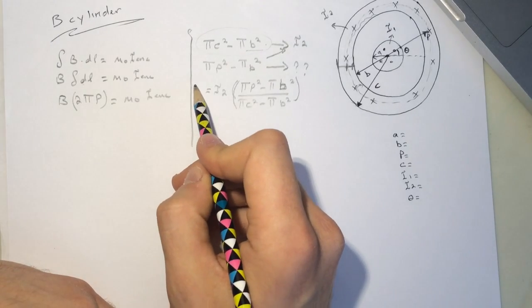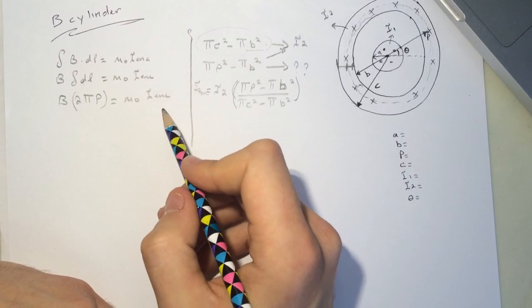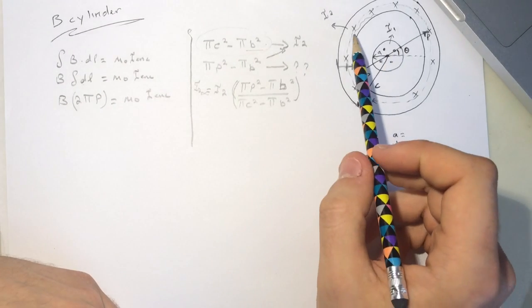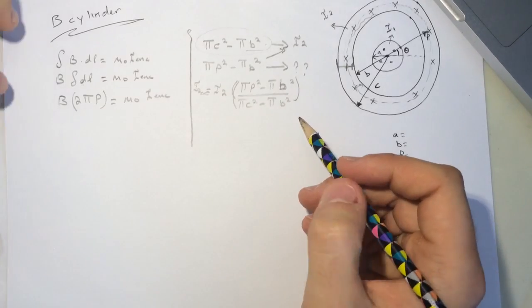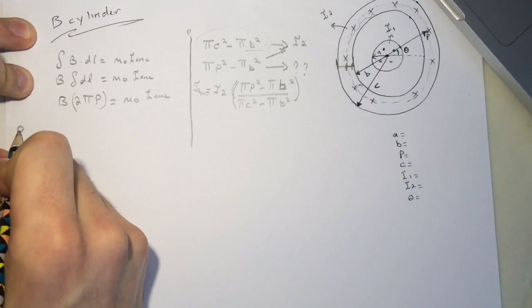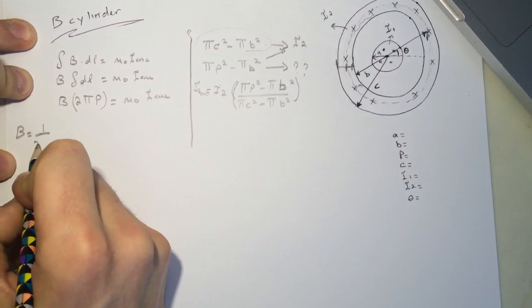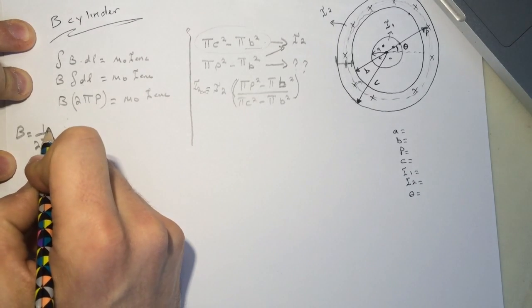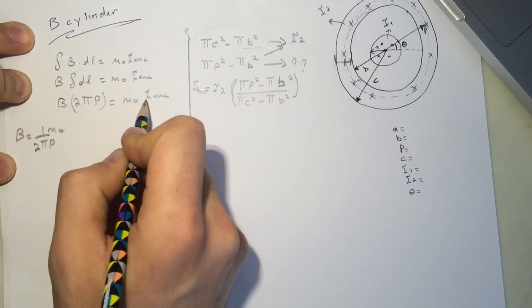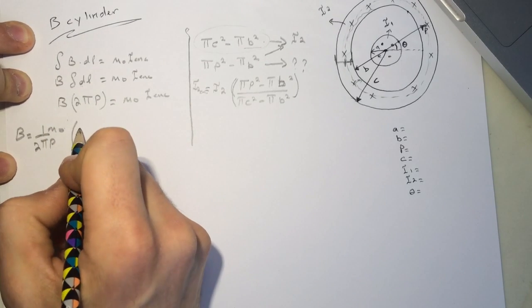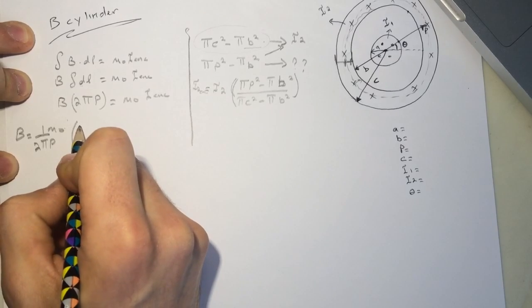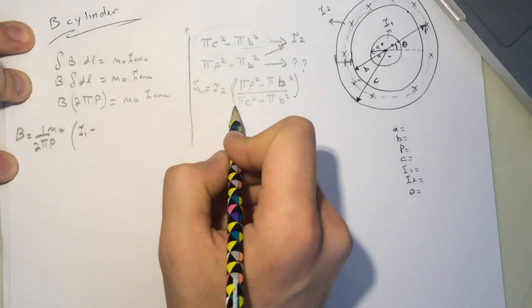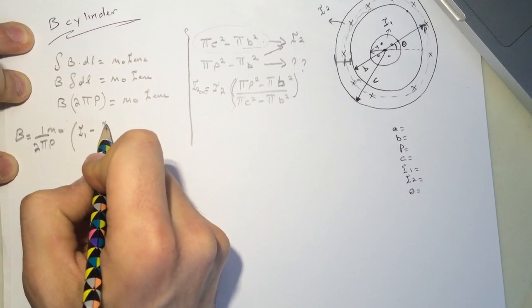So this will be the i2 enclosed. And if you look at this, this is going outside of the page and this is going inside of the page. So we're going to subtract those. So the b field will be equal to 1 over 2 pi p and then times, let's put the mu here. And then the i enclosed now is going to be i1 minus this term here, which is i2.